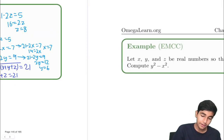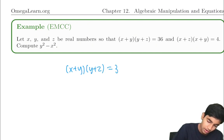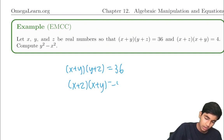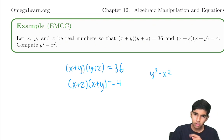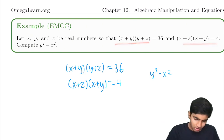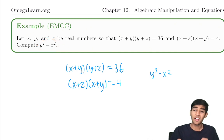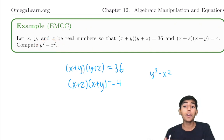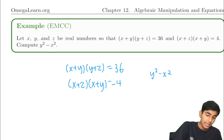Now we're on to another cool equation. (x plus y)(y plus z) equals 36, and (x plus z)(x plus y) equals 4. Compute y squared minus x squared. We have three variables but only two equations — this seems impossible. But we don't want to solve for any variable; we just want this expression. Another important problem-solving technique: you don't always have to find every variable individually.